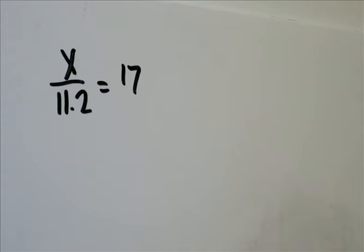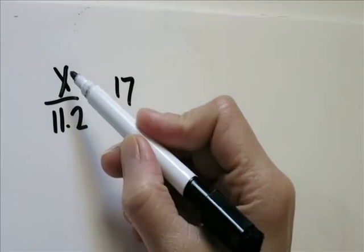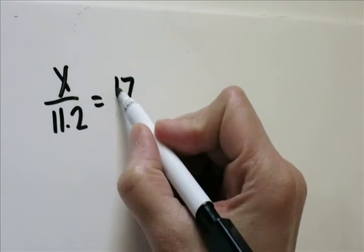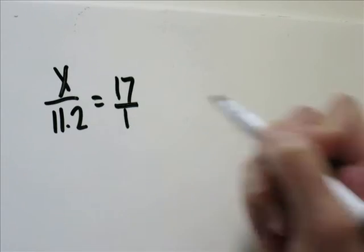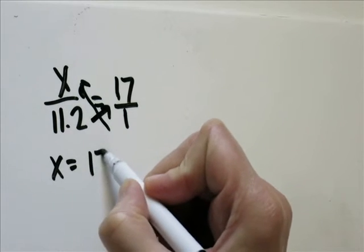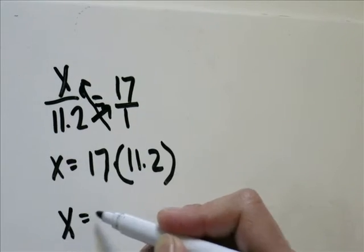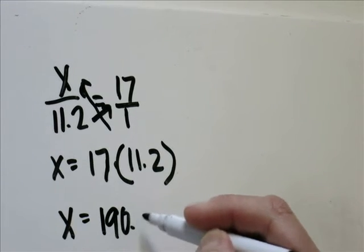The second way to go about solving this would be to cross multiply. So you have x over 11.2 equals 17. We'll just say that's 17 over 1. Cross multiply, you'll get x equals 17 times 11.2. x equals 190.4.